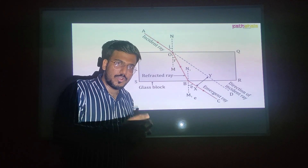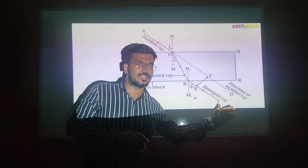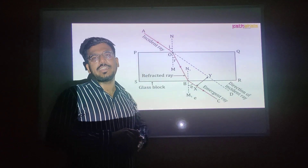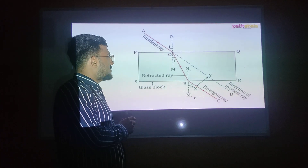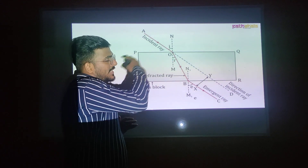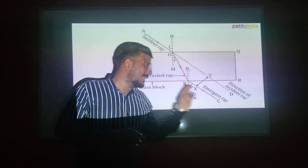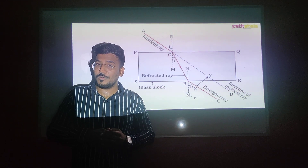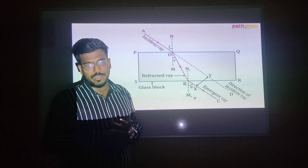This was the glass slab experiment and its result. The ray of light that was supposed to travel straight — shown by the dotted line — got shifted because of the glass slab. This shift is what we observed as the emergent ray. In the diagram, PQRS is the rectangular glass slab acting as a denser medium; AO is the incident ray, OB is the refracted ray, and BC is the emergent ray. I is angle of incidence, R is angle of refraction, and E is the angle of emergence.